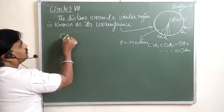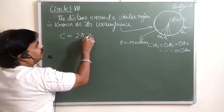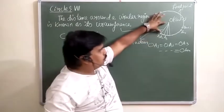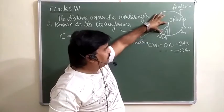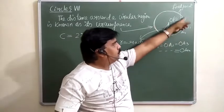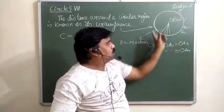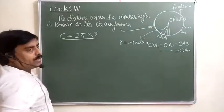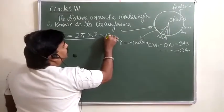The circumference of the circle is equal to 2πR. If you know the radius — that fixed distance — you can calculate the length of this path, the circumference. So circumference equals 2πR, or simply 2πr.